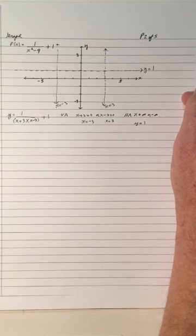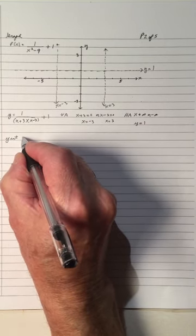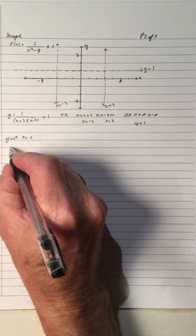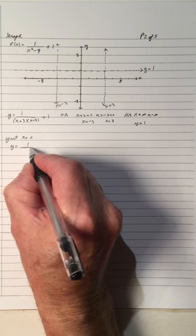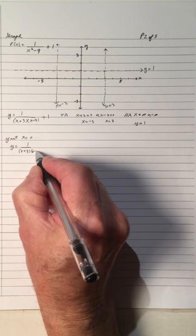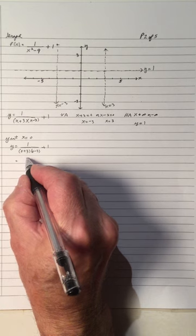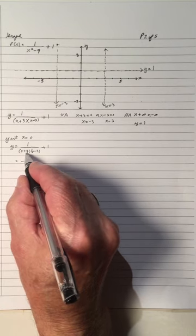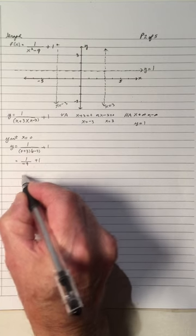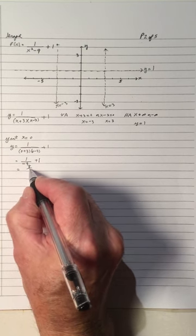Now let's look at the y-intercept. The y-intercept is when we let x equal 0. So take the equation and let x equal 0: y equals 1 over (0+3)(0-3) plus 1. That gives 1 over negative 9 plus 1, which is negative 1 over 9 plus 1, and that becomes 8 over 9.